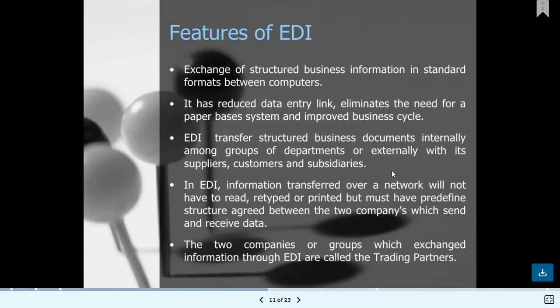Features of EDI include the exchange of structured business information in a standard format between computers. It reduces data entry, eliminates the need for paper-based systems, and improves the business cycle. EDI transfers structured business documents internally among departments or externally with suppliers, customers, and subsidiaries. Information transferred over a network does not need to be retyped or printed, but must have a predefined structure agreed upon between two companies.